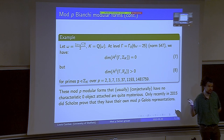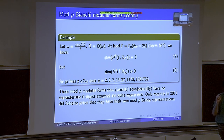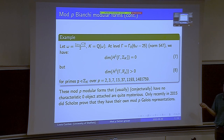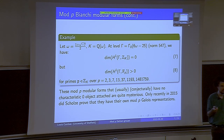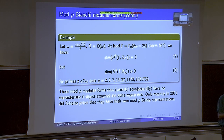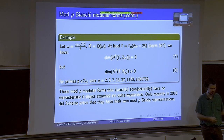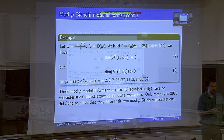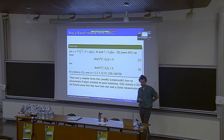These mod P modular forms conjecturally don't have an attached characteristic zero object. For small primes p = 2 and p = 3, something should appear at a higher level. But for larger primes, I don't think anyone really believes we'll find some characteristic zero form congruent mod one and a half million to something. It was only in 2015 that Peter Scholze proved that these massive ones — even those for which no congruence is known — have their own mod P Galois representations in the usual way of matching Hecke eigenvalues to traces of Frobenius.